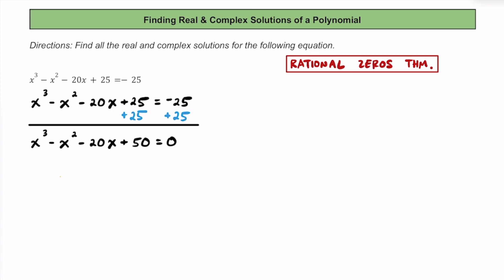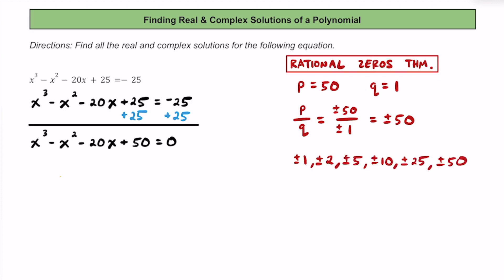To use the rational zeros theorem, we need to identify our p and q values. p is represented by the constant term, which is 50, and q is the leading coefficient, which is 1. From p and q, we find the ratio of all their factors — that list of possible rational zeros includes plus or minus all the factors of 50 over plus or minus 1. Since we're dividing by plus or minus 1, it really just comes down to the factors of plus or minus 50. Go ahead and write those down with their plus and minus versions.